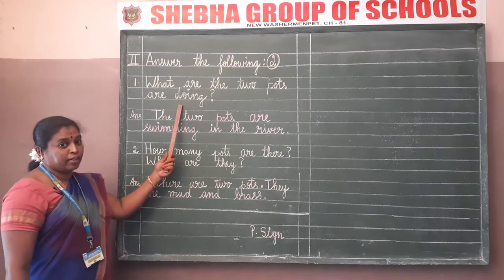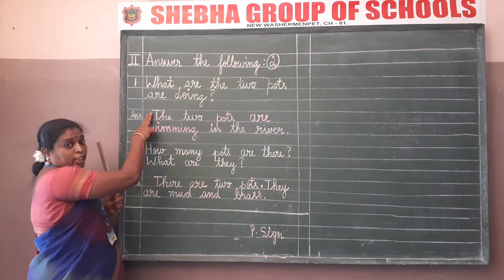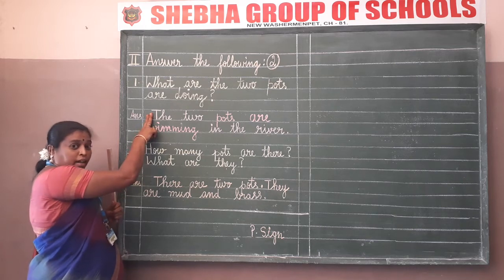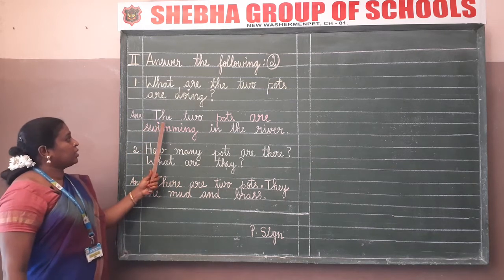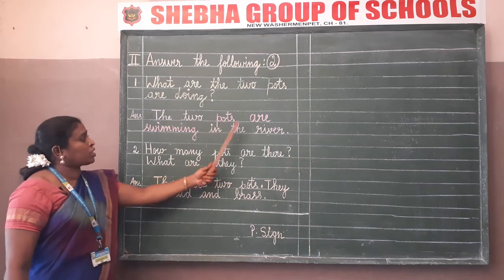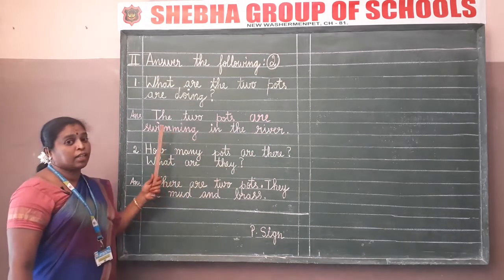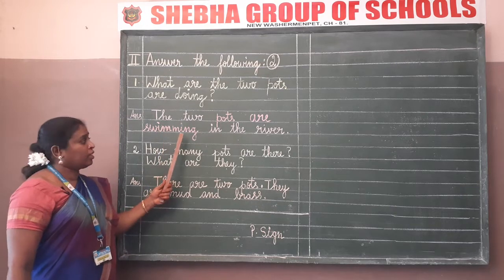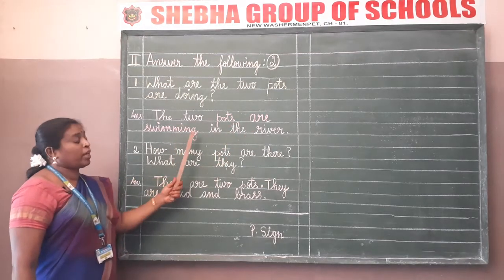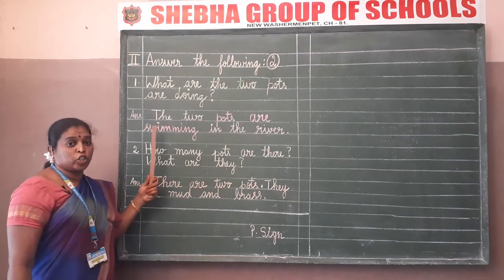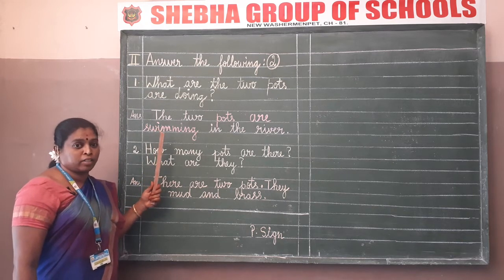Leave the line and start writing from the next line. Answer: keep two finger space gap before writing the answer. Start with the capital letter: 'The two pots are swimming in the river.' You should not leave the line for the answer. Now I am going to spell the word - spell with me and write. Then only the answer will be registered in your mind.